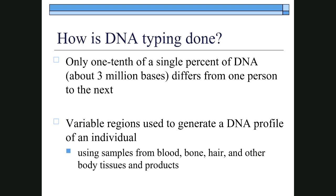One thing we're going to talk about in more detail is DNA typing. One-tenth of a single percent of DNA differs from one person to the next. Although that's a very small amount, it still amounts to about three million bases. Your bases are your nucleotides — G, A, T, and C — and those are going to differ slightly from one person to the next. How we type DNA is by looking at those variable regions to identify a DNA profile, also known as a DNA fingerprint.